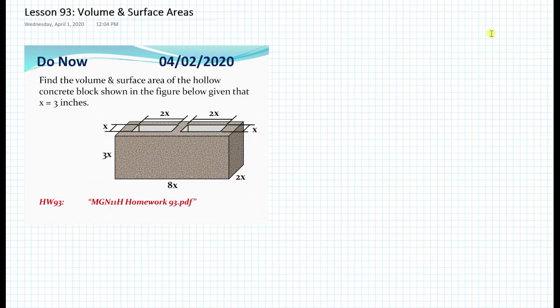So today in lesson 93, we will be learning about volume and surface area and how to find these. For the do now, it says find the volume and surface area of the hollow concrete block shown in the figure below, given that x is equal to 3 inches.